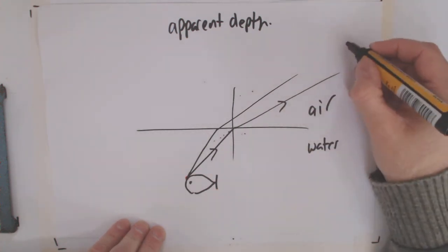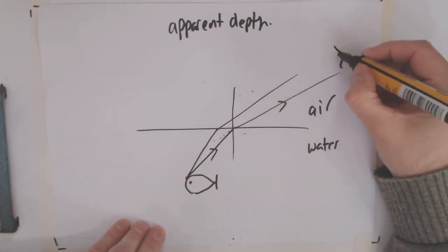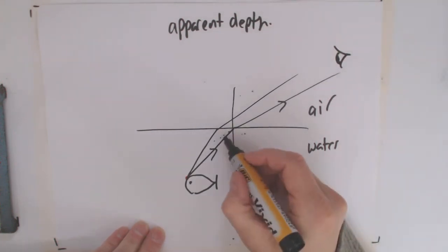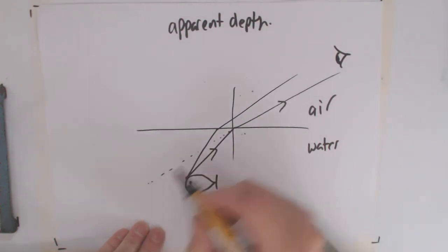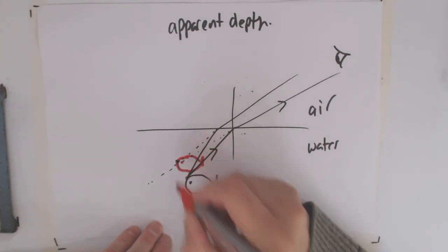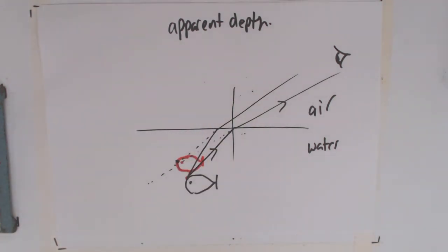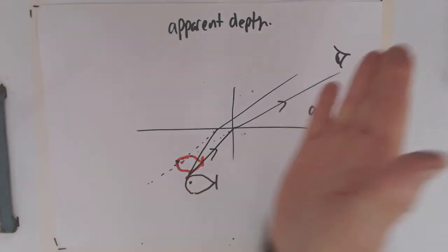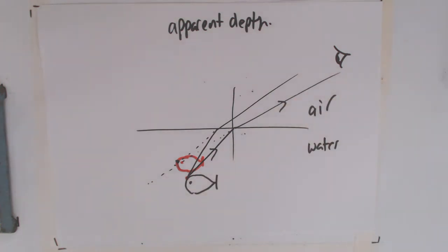If we now were an observer up here looking down towards that fish, we're going to think that ray came from there, and we're going to think this ray came from there. So we're actually going to see the fish more shallow than he really is. Apparent depth, and that's because of the bending of the light as it leaves the water.